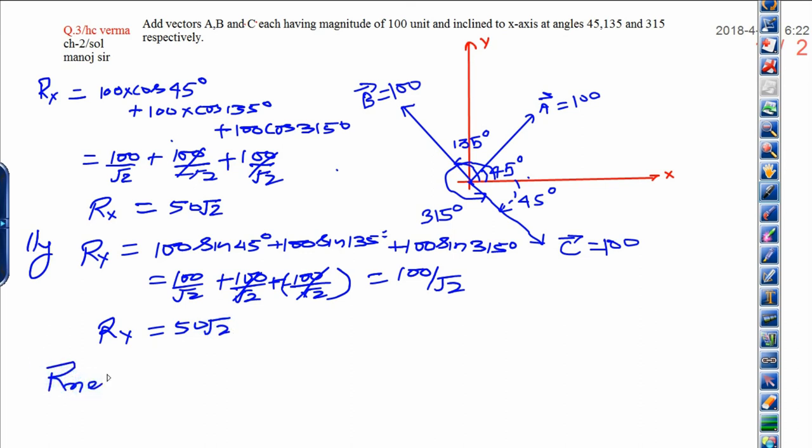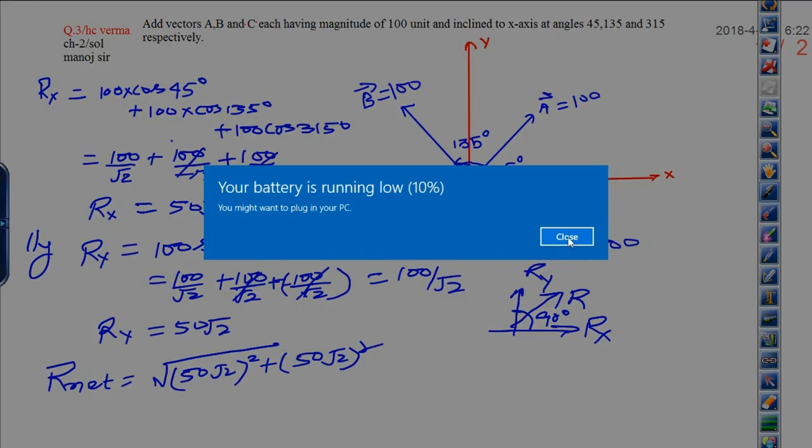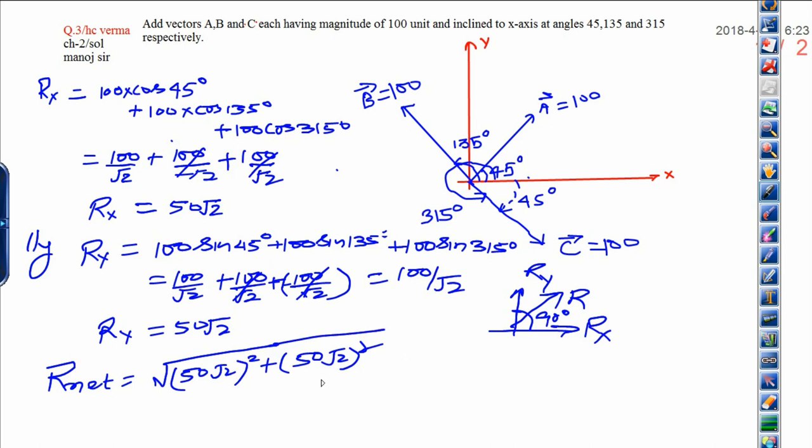Now you have to calculate the net resultant. Net resultant: one is along x-axis, that is Rx, one is along y-axis, that is Ry. The angle is 90 degrees. You know when the angle is 90 degrees, resultant by parallelogram can be calculated. That will be square root of 50 root 2 whole square plus 50 root 2 whole square. That is why R net equals 100 units.